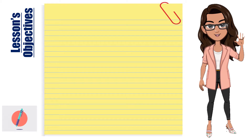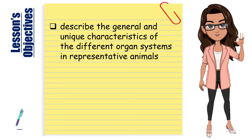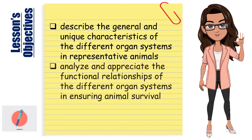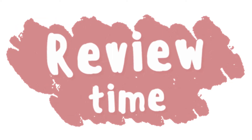After you are through with this module, you are expected to describe the general and unique characteristics of the different organ systems in representative animals, and analyze and appreciate the functional relationships of the different organ systems in ensuring animal survival.